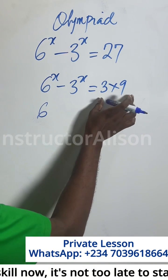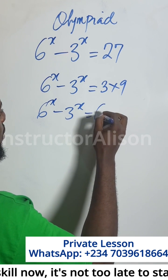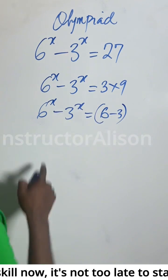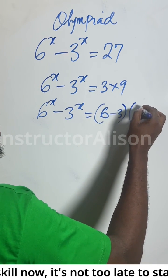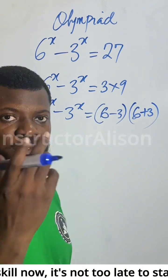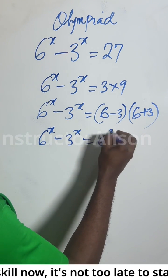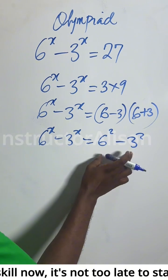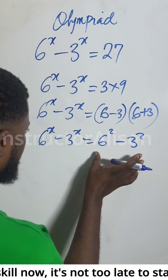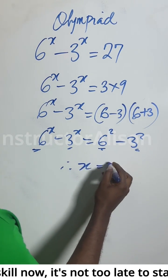So now, what do you represent on the left-hand side? The right-hand side should be used like this: 6 to the power of x minus 3 to the power of x equals 3 times 9. I can think of 6 minus 3, which gives me 3, and 6 plus 3, which gives me 9. This is the same thing as the difference of two squares — here you have 6 squared minus 3 squared, which is the same as (6 minus 3)(6 plus 3). This similarity means the power of x is 2, so x equals 2.